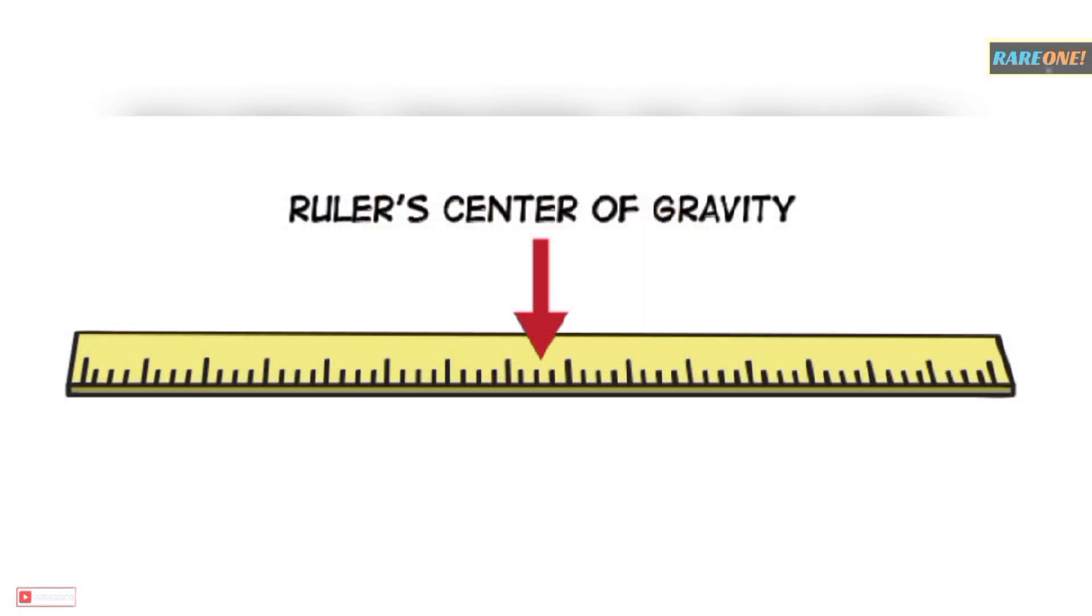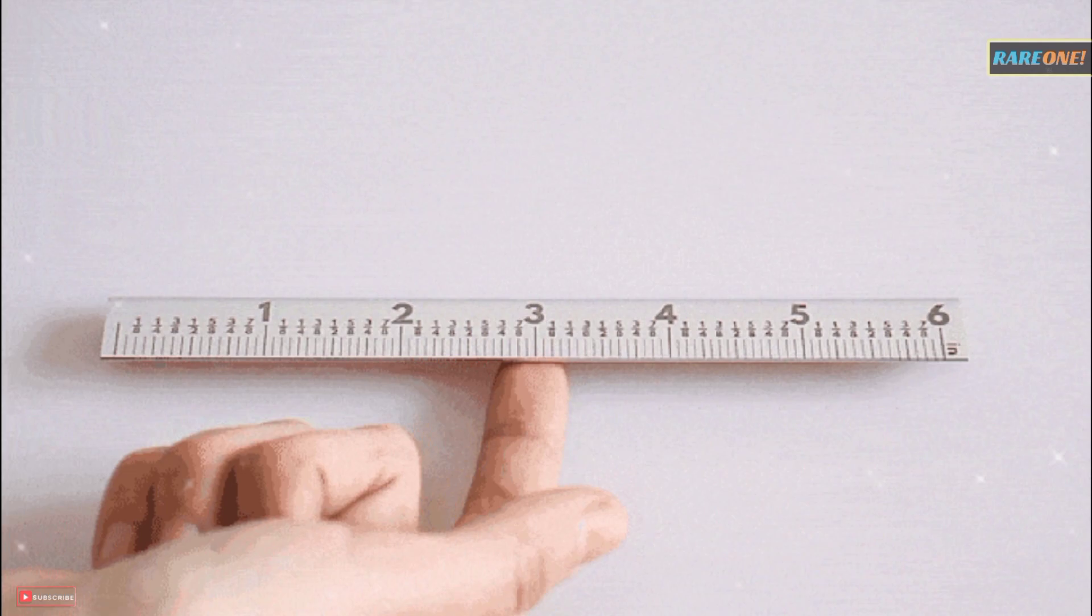For instance, take a ruler. There's a specific point where you can balance it on just one fingertip. That's its center of mass.